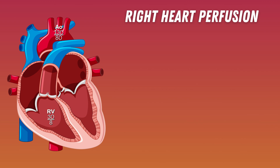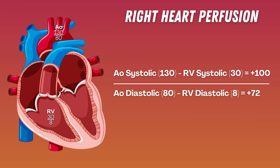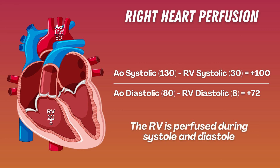Now let's look at what happens in the right ventricle. Using the same systemic blood pressure of 130 over 80: 130 minus a normal RV systolic pressure of 30 gives a net positive 100. For diastole, 80 minus the normal RV diastolic pressure of 8 gives us 72. Based on these numbers, we can see that perfusion occurs during both systole and diastole, with greater perfusion during systole. So the maxim that the heart is only perfused during diastole is not true for the right ventricle.